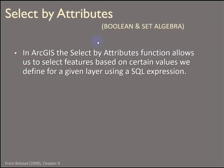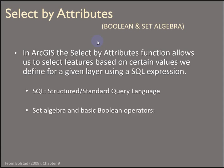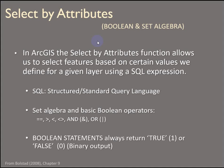Selecting by attributes allows us to do both Boolean and set algebra queries. SQL stands for Standard Query Language — you've probably used it before, and it's less complicated than it sounds. Set algebra uses basic operators like equal to, greater than, and less than. Boolean statements produce binary outputs — true or false — and you can use the Boolean operators AND and OR.